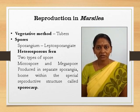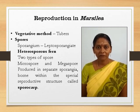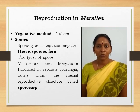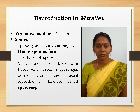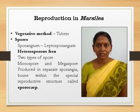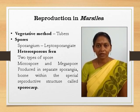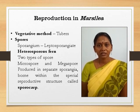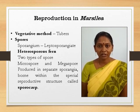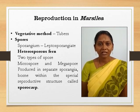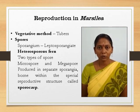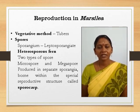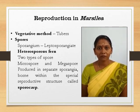The second method of reproduction is by spore formation. Marsilea is a heterosporous plant. Hetero means different. Here you can find the formation of two different types of spores: one is called microspore and another one is megaspore. The development of sporangium in Marsilea is leptosporangiate type. Leptosporangiate means the sporangium develops from a single initial. In Marsilea, the sporangia are produced in a specialized structure called sporocarp.